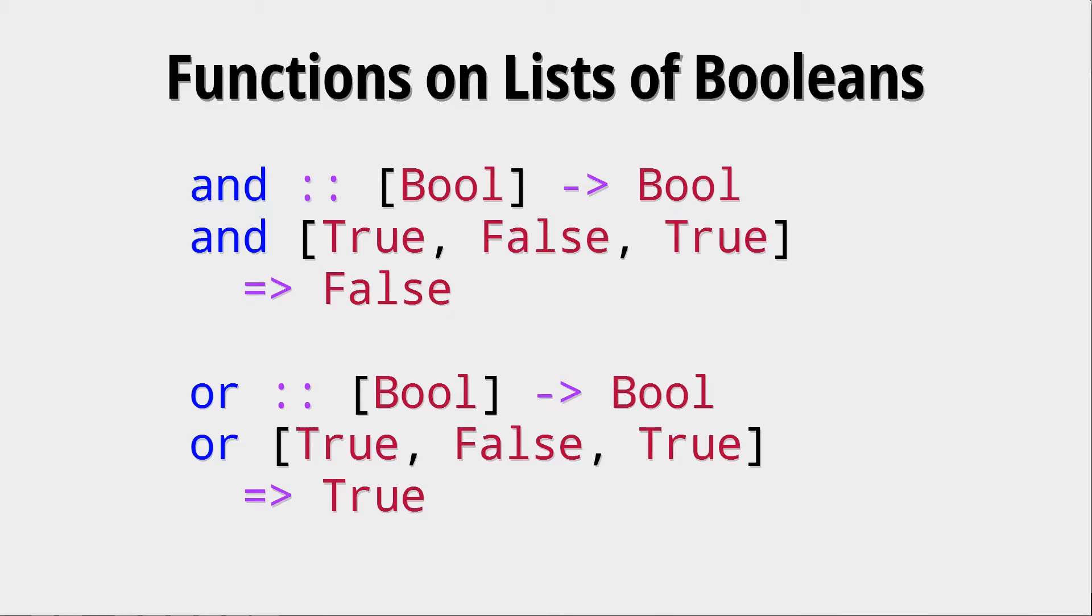Talking about lists of booleans, for some lists there are already some functions defined that can be helpful. For example, and and or, which do the boolean and or boolean or on any amount of booleans within a certain list. Why would you use something like that? Well, if you have a lot of conditions to check, you could put them in a list of booleans and then do an and or or on that list.